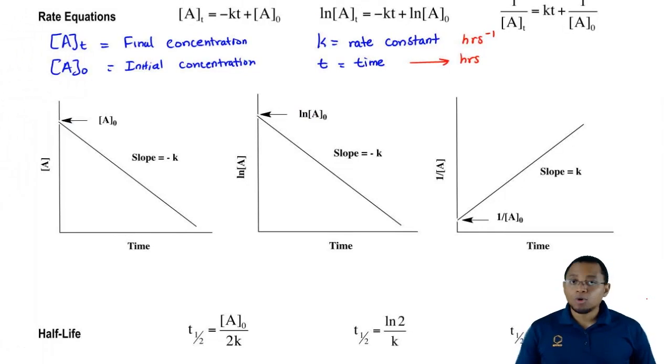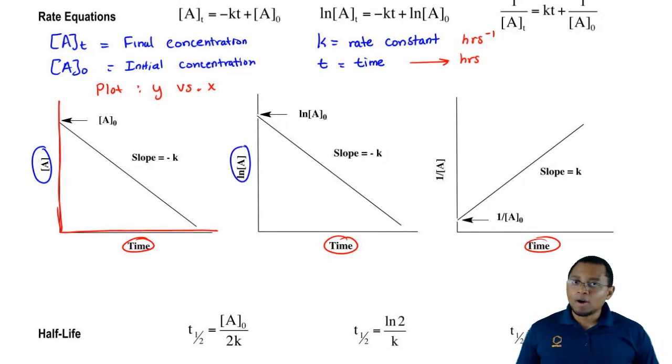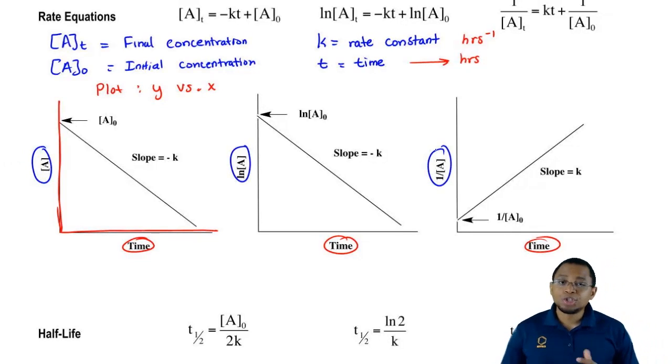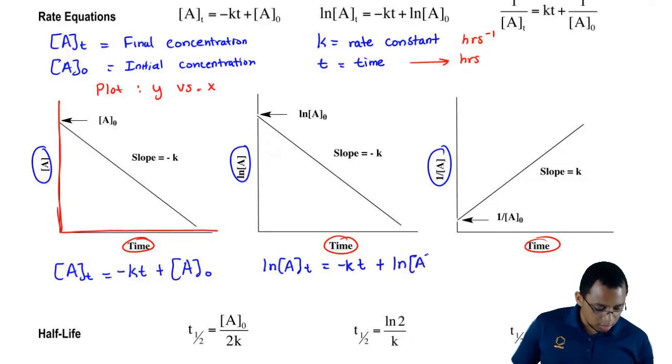Now with each one of these orders, there comes a graph. Anytime we plot a graph, it's of Y versus X. Our Y axis is this and our X axis is this. For all of them, the X axis will always give us time. The Y can either be concentration of our reactant, ln of our reactant, or 1 over our reactant. Each one of these integrated rate law equations can be used to write out this plot.